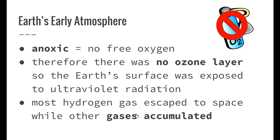The Earth's early atmosphere is what we call anoxic, meaning it has no free oxygen. As a result, there was no ozone layer, and the Earth's surface was exposed to ultraviolet radiation. Because of this, the Earth's temperature was extremely high — much greater than 1000 degrees Celsius on the surface — meaning there was absolutely no way that living organisms could have survived at that time.